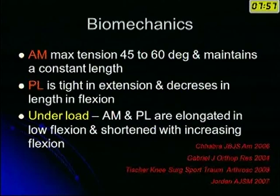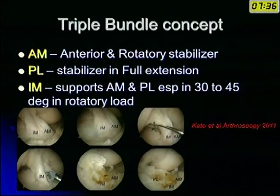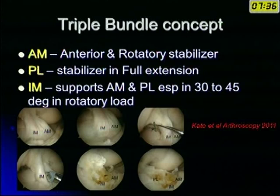A lot of studies have recently gone into these bundles. There is also a three-bundle concept, originally described from Japan, with an intermediate bundle which, in cadaveric studies, has been found to support the AM and PL bundles — especially in 30 to 45 degrees of rotatory load. This was studied by the University of Pittsburgh group, the Freddie Foose group.